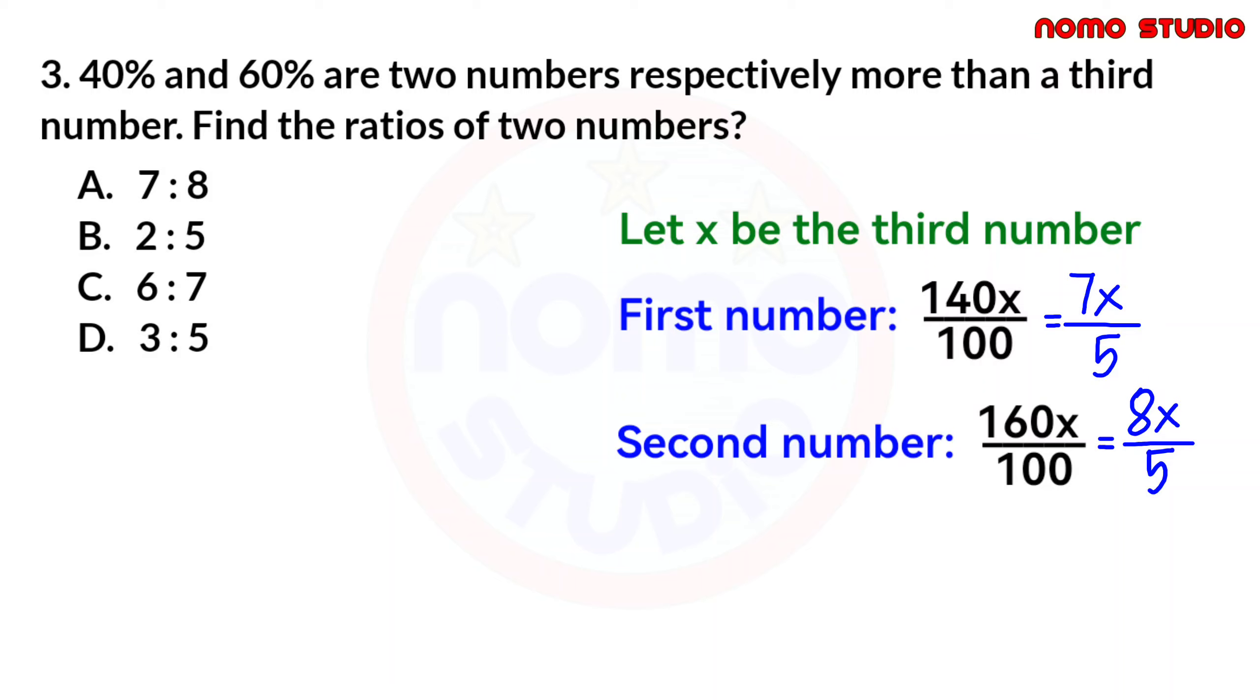what we will do now is to equate these two numbers. So, now, we have 7x over 5 equal to 8x over 5. Again, I mentioned earlier that a ratio can be written into a fractional form. Now, what we will do when you see this kind of form, one fraction, then an equal sign, then another fraction, what you do is to cross multiply.